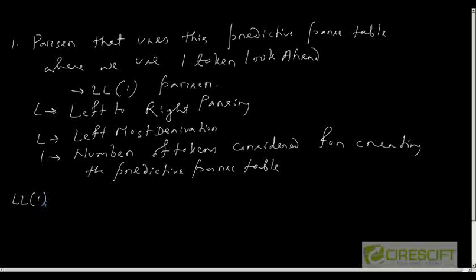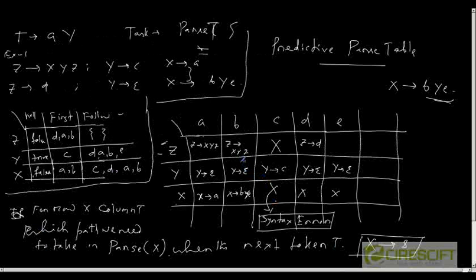The grammar which results in a unique entry in a given Predictive Parse Table is called LL1 grammar. Here you can see that the grammar we have uses has resulted in unique entry in every cell. Either it has an entry or it has no entry, but wherever there is an entry, it is unique.